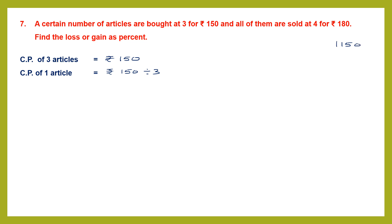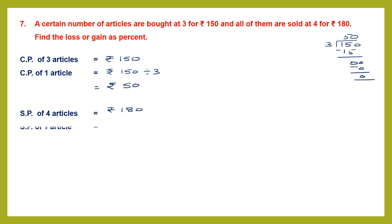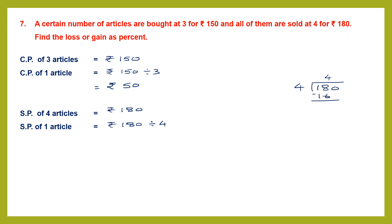When you divide 150 by 3: 3 fives are 15, remainder 0, so we get 50. The cost price of one article is 50 rupees. Similarly, the selling price of 4 articles is given as 180 rupees. The selling price of 1 article will be 180 divided by 4. Taking 18: 4 fours are 16, remainder 2; bring down 0 to get 20; 4 fives are 20, remainder 0. Quotient is 45. The selling price of one article is 45 rupees.